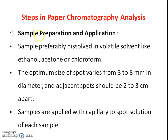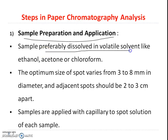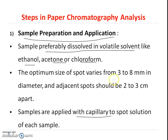The first step is sample preparation and application. The sample is preferably dissolved in volatile solvents like ethanol, acetone, or chloroform, so that when we apply the spots with the help of a capillary onto the paper, the solvent will evaporate easily with no diffusion of the sample. We will get the optimum spot size of 3 to 8 mm.